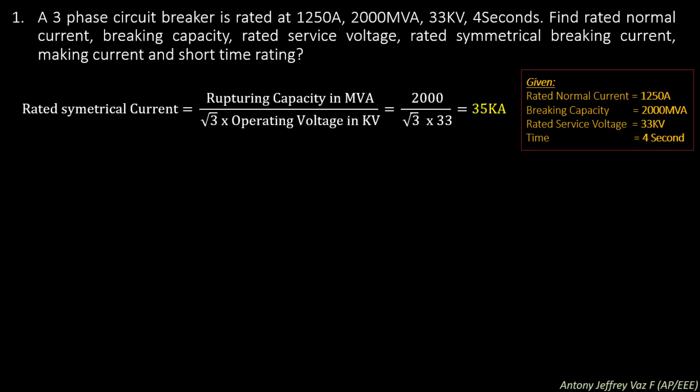The formula is: rated symmetrical current = rupturing capacity in MVA divided by root 3 into operating voltage in kV. Here the rupturing capacity is 2000 MVA, divided by root 3 into 33 kV. So for 3-phase we have 33 into root 3. Simplifying this we get an output of 35 kA.